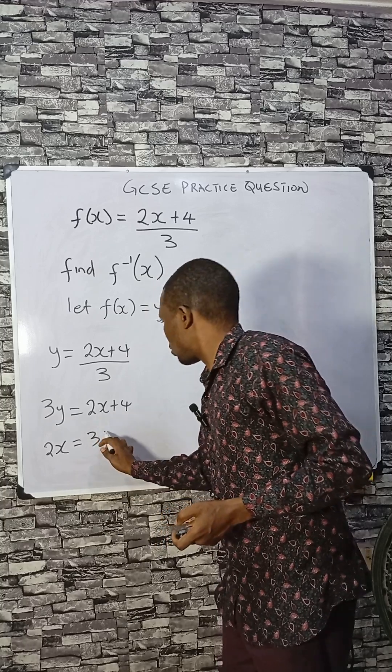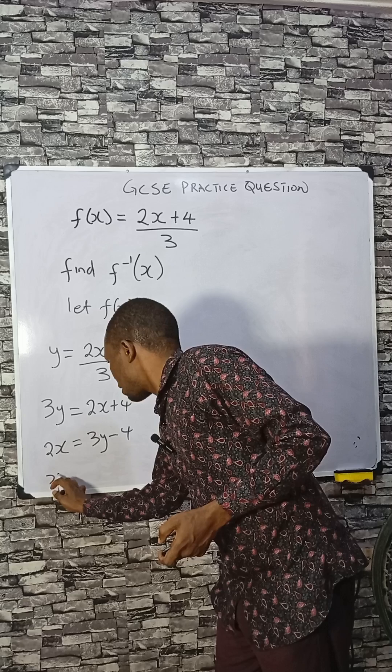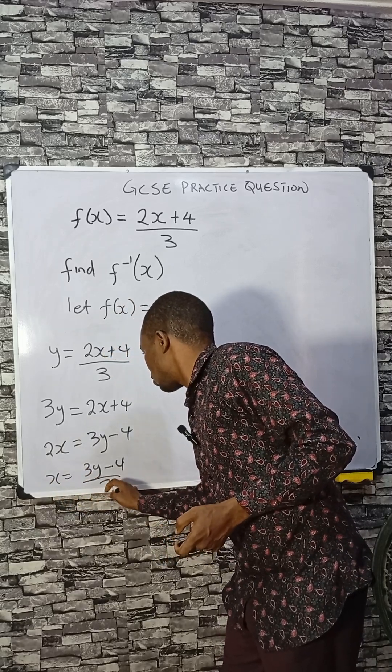Therefore, x equals 3y minus 4 divided by 2.